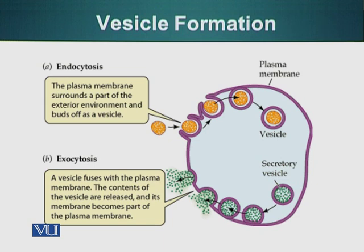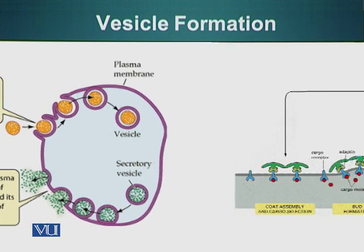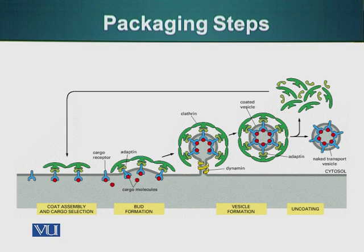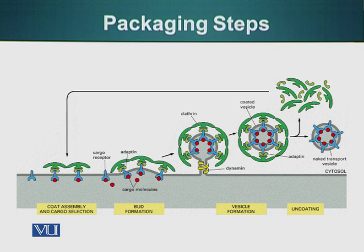We look at the example of receptor-mediated endocytosis in the next slide. This process initiates when a special receptor protein, which is traversing the plasma membrane or the lipid membrane, interacts with a specific molecule. When this interaction takes place — you can see the little red dot interacting with the blue receptor structure — there is a change in the cytoplasmic domain of this blue protein which allows certain other proteins to assemble on its cytoplasmic site.